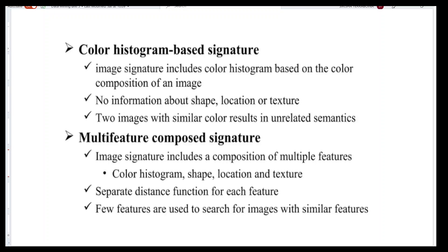The color histogram based signature: the image signature includes the color histogram based on the color composition of the image. No information about shape, location, or texture is given. It determines whether two images with similar colors represent related or unrelated semantics. Retrieving images based on colors is the color histogram based signature.